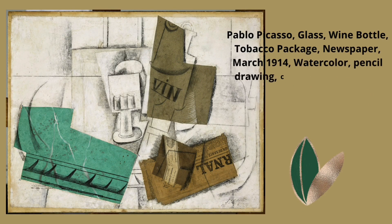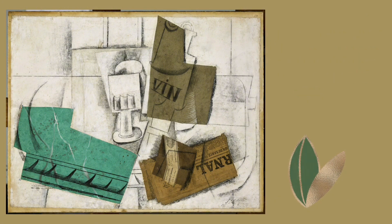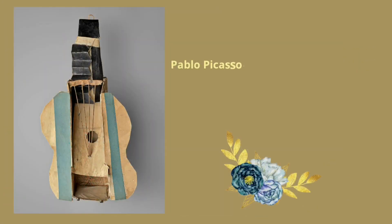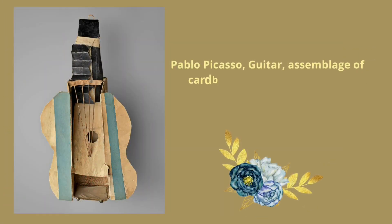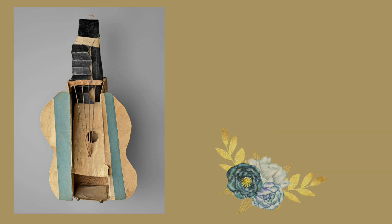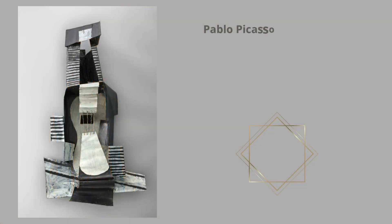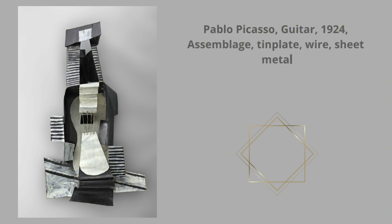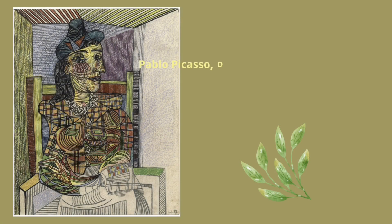Guillaume Apollinaire's support was unequivocal. In his 1913 book Les Peintres Cubistes, he championed the freedom to paint with any material, valuing the inherent worth of the work. Picasso's artistic explorations are further exemplified in The Man with the Guitar.